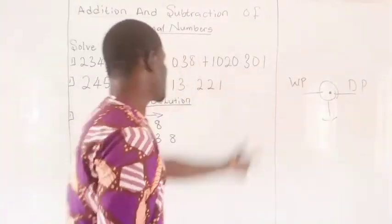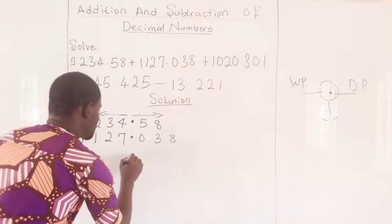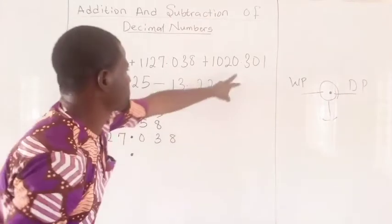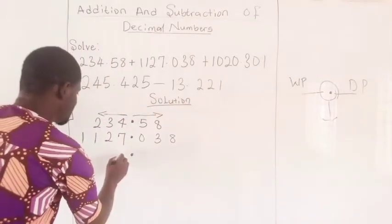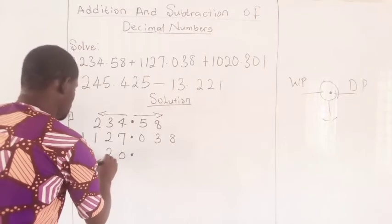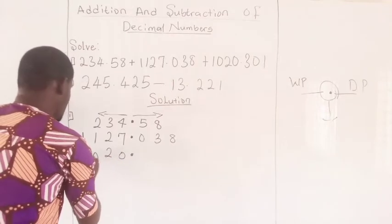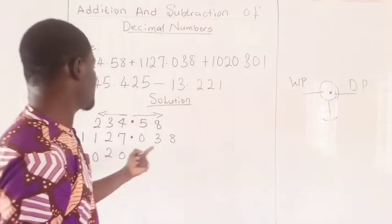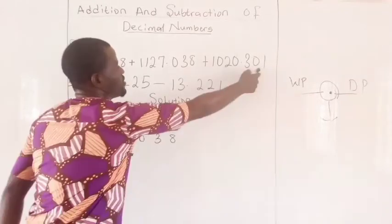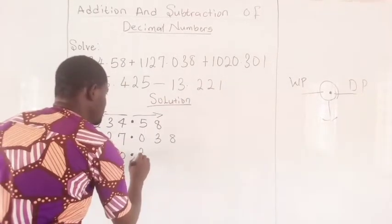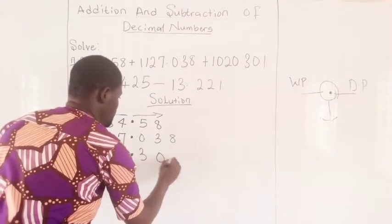Now, the last set of numbers, still introduce your decimal point. Going this way, we have zero, two, zero, and one. And, going to the right-hand side, we have three, zero, one.